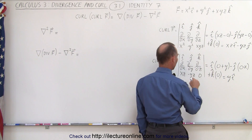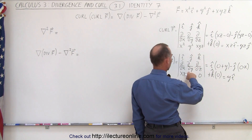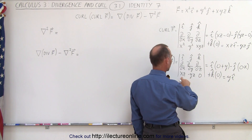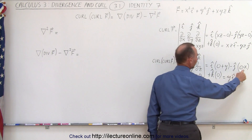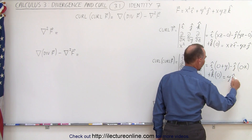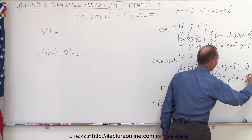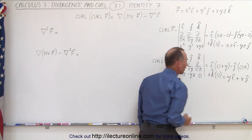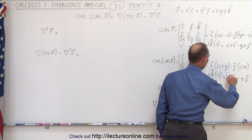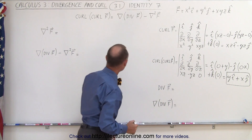Let's verify that: the minus times minus is plus, so we get plus X in the J direction, and no K component. So the curl of the curl is Y in the I direction plus X in the J direction — that is the left side of the equation. Let's see if we get the same result when we work out the right side.